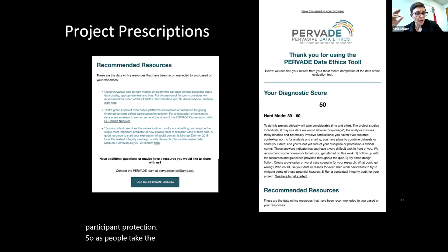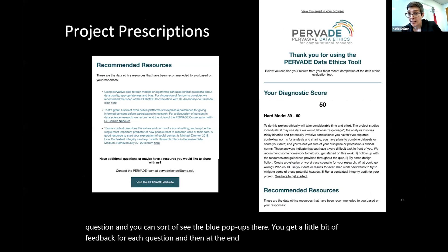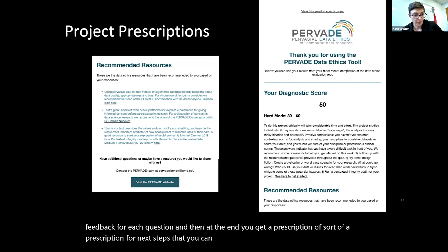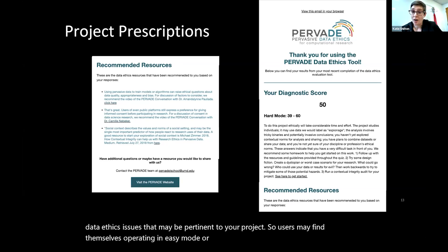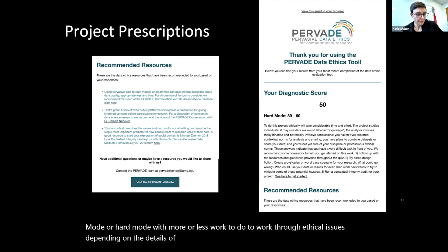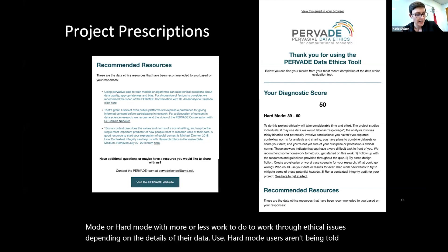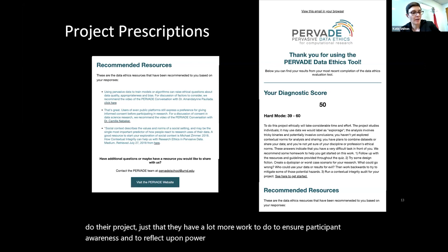As people take the questionnaire, they get per-question feedback — you can see the blue pop-ups — a little bit of feedback for each question. Then at the end, you get a prescription, a sort of prescription for next steps that you can work through to help address the data ethics issues pertinent to your project. Users may find themselves operating in easy mode, intermediate mode, or hard mode, with more or less work to do to work through ethical issues depending on the details of their data use. Hard mode users aren't being told not to do their project, just that they have a lot more work to do to ensure participant awareness and reflect upon power in their project.